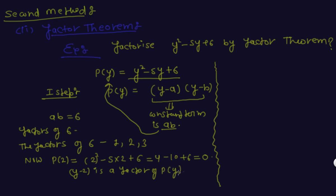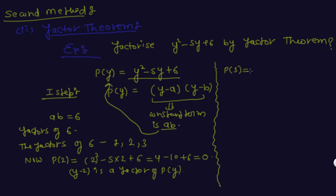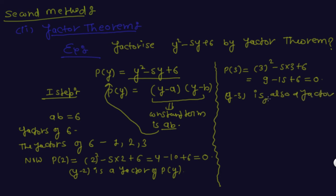Again we check p(3): p(3) = 3² − 5×3 + 6 = 9 − 15 + 6 = 0. Since p(3) = 0, (y − 3) is also a factor of p(y).